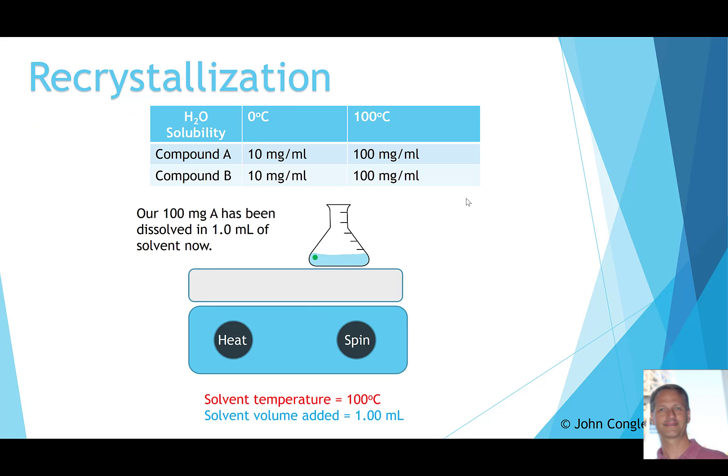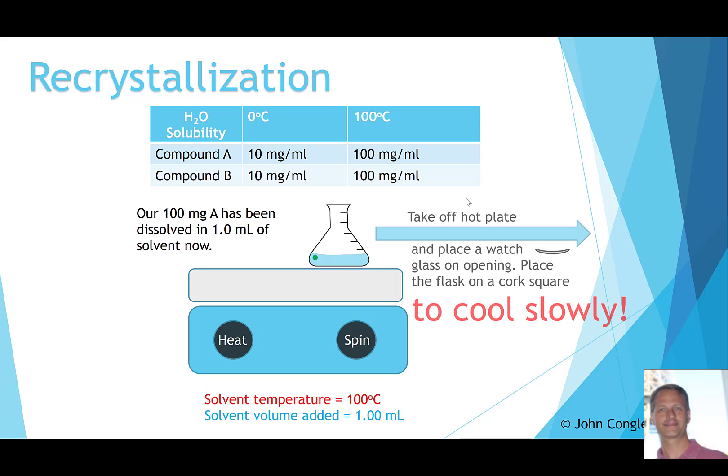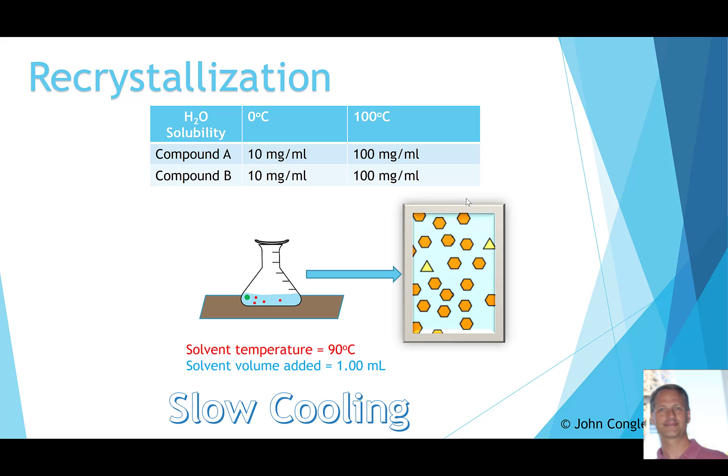Now we have 100 milligrams of compound A dissolved in 1 milliliter of solvent at 100 degrees Celsius. We want to allow this to cool, so we take it off the hot plate, place a watch glass on top to prevent further solvent evaporation, and set it on a cork square on our desk to allow it to cool slowly. This is important.